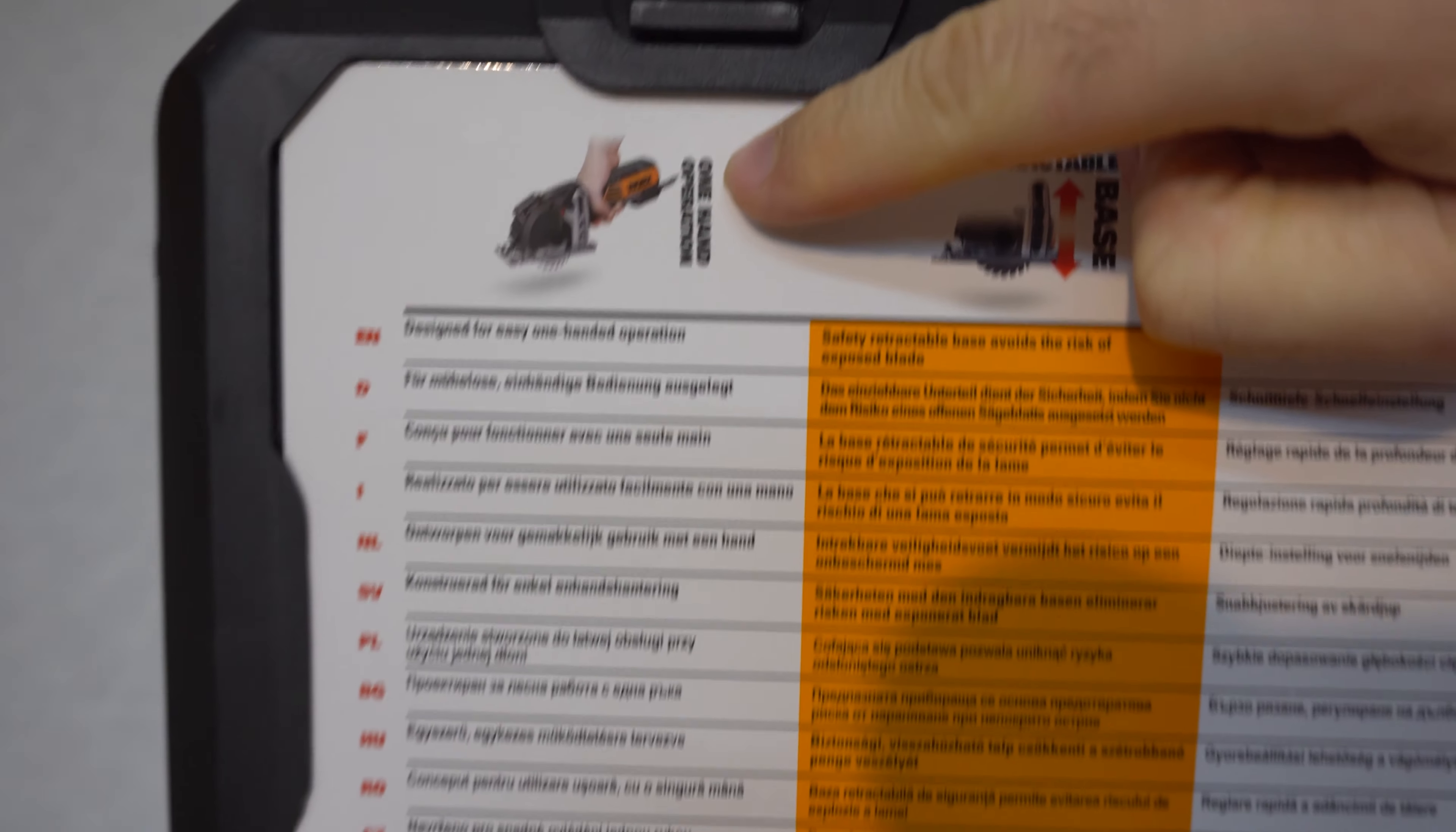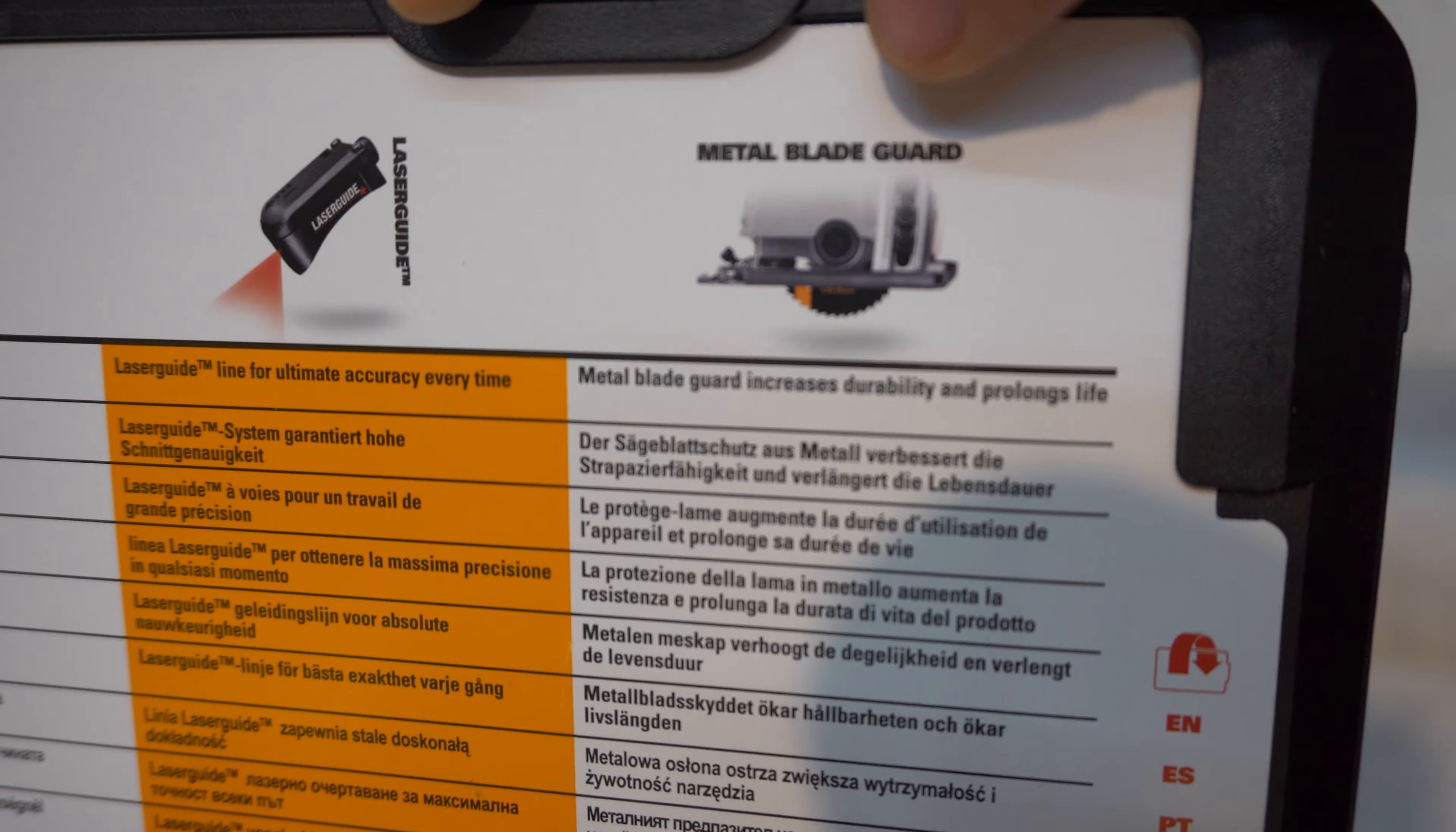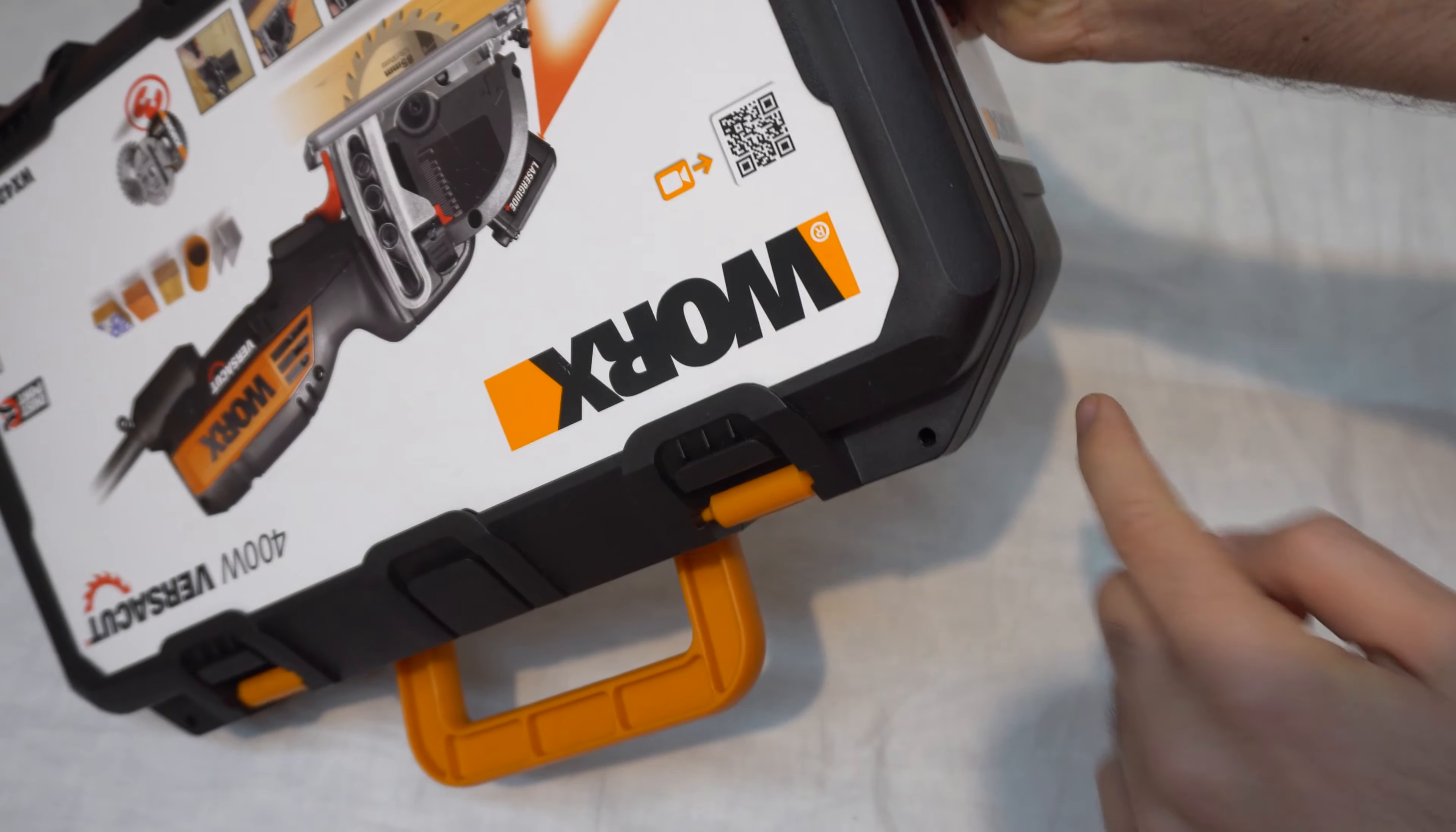Here is some more text in more languages. It's designed for one-handed operation. The base is retractable, it moves up and down. The depth of the cut is adjustable. The laser beam for accuracy so that you can see where it will cut. And there is a metal blade guard. That base is metal and is protected by a plastic part also.